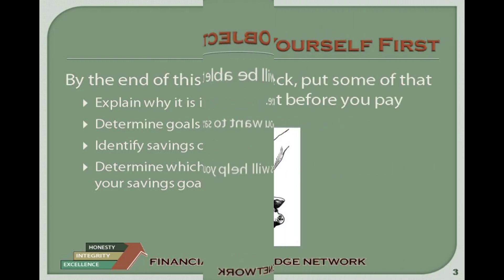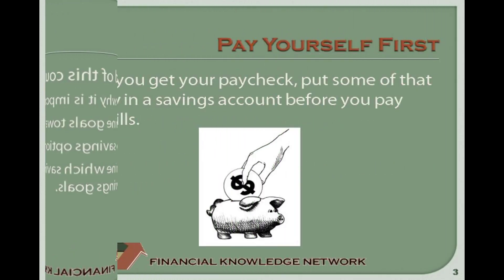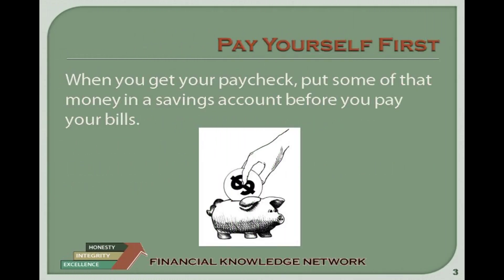Saving Tip 1: Consider needs versus wants. Think about the items you purchase on a regular basis — these add up. Where can you save? Do you eat out at restaurants a lot? Can you cut back on daily expenses such as coffee, candy, soda, or cigarettes? Do you have services you don't really need, such as cable television or a cell phone?